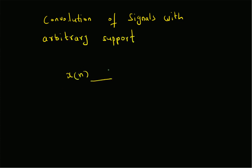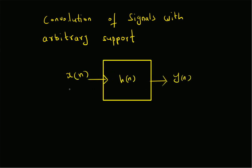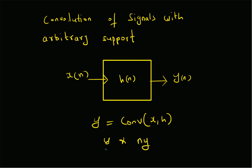Basically, we have a signal x[n] that goes through an LTI system with impulse response h[n] and the corresponding output is y[n]. Usually to compute the output y in MATLAB, what we do is use the function: y = conv(x, h). But unfortunately this function does not give us the output corresponding to the time support. So we need to modify this function such that we get both y and also the time support, that is n_y — both the time values and the corresponding signal values. Let us look at the MATLAB code for this purpose.